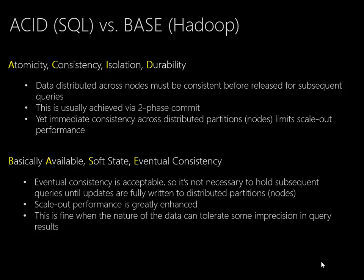We do have to keep in mind that the nature of the data needs to be able to tolerate some of this imprecision in order to get that scalability. If we have something like bank account balances being updated, BASE isn't a really good model for that — we really need ACID for that. As we go through the technology, it's always good to keep in mind that these two technologies were designed with fundamentally different business requirements. At some level, we can't really mix those requirements together. We can use Hadoop, but we need to use it where it really works well and where it applies, and not use it where we need ACID-style transaction control.